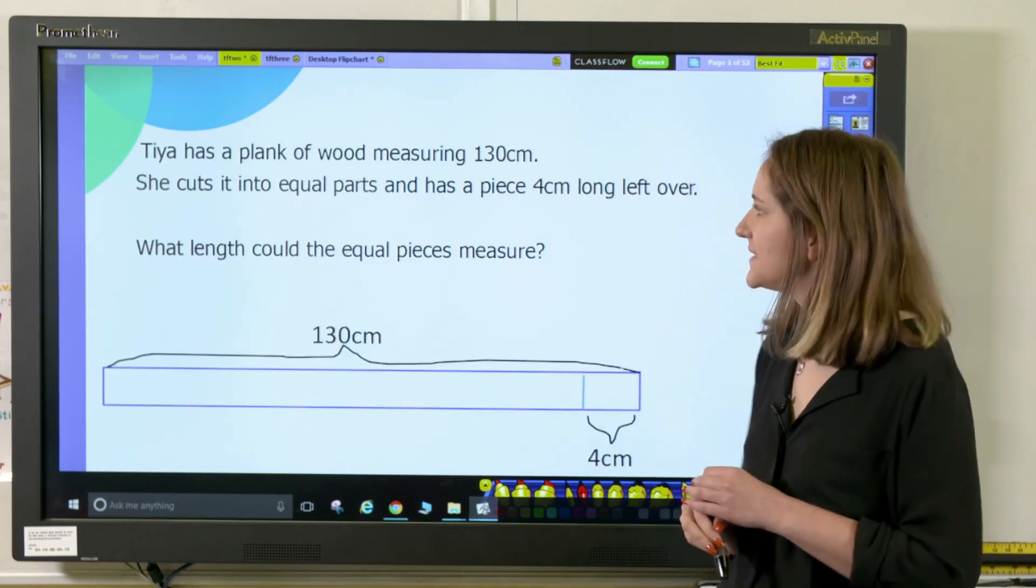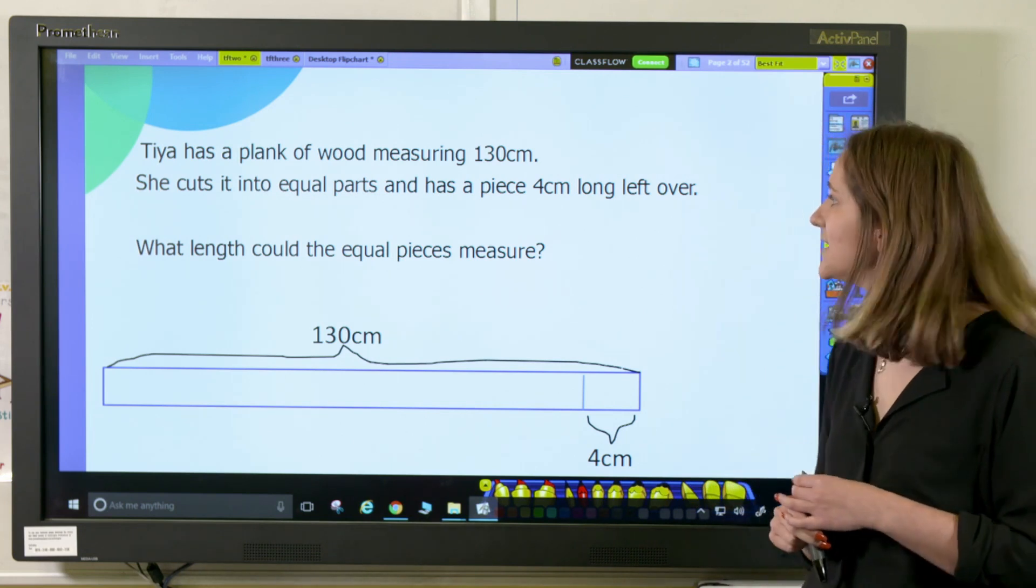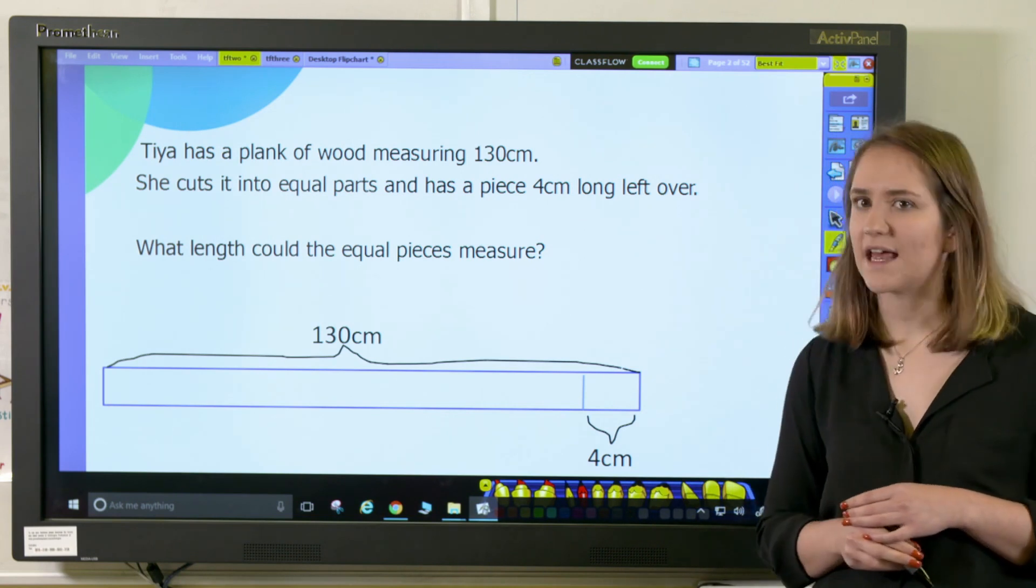This next problem says Taya has a plank of wood which measures 130 centimeters. She cuts it into equal parts and has a piece 4 centimeters left. What length could the equal pieces measure? You may wish to ask your pupils to reword this problem as that's a great way of assessing their understanding.